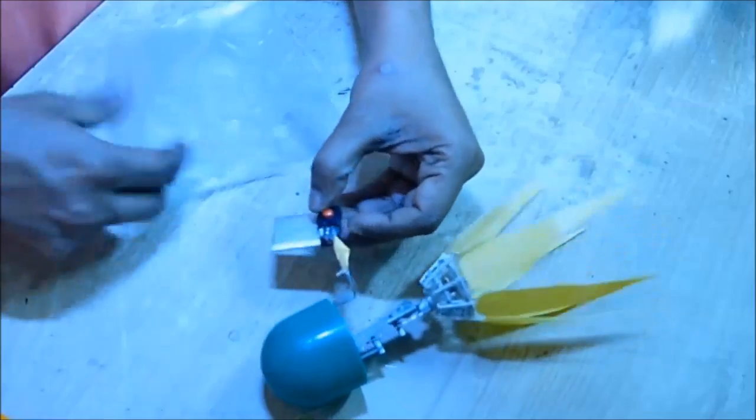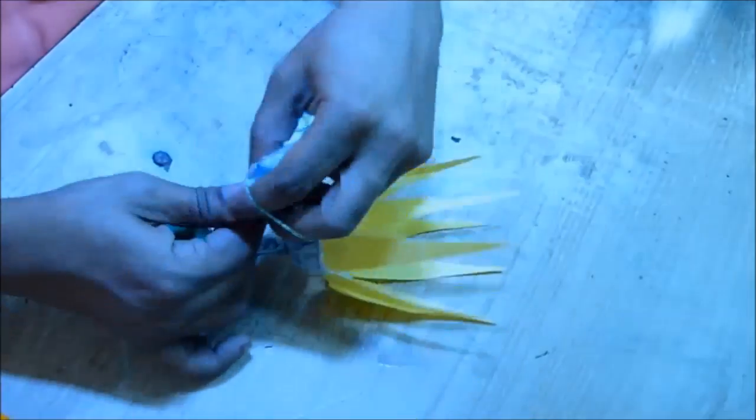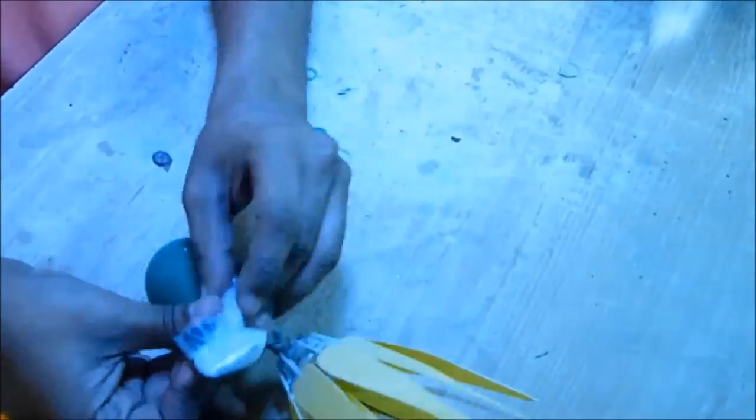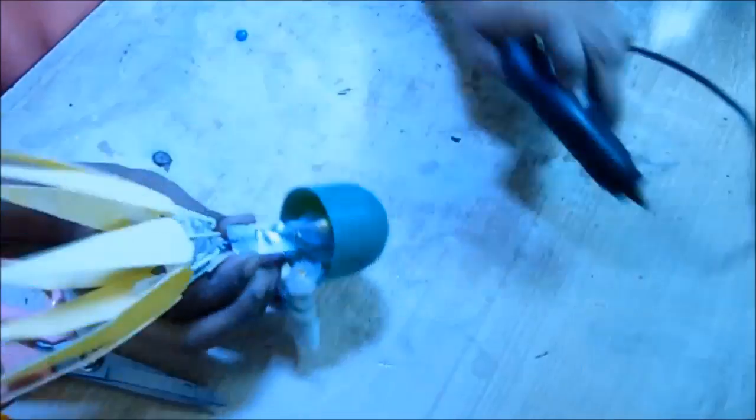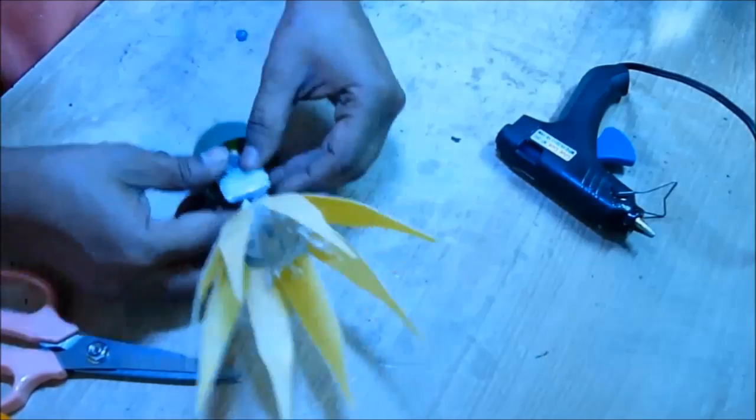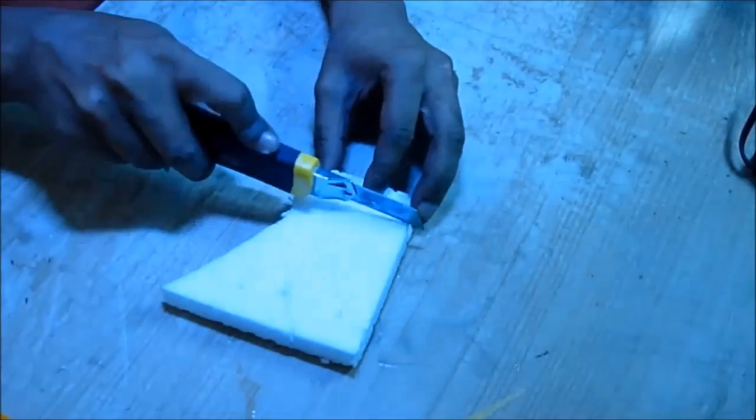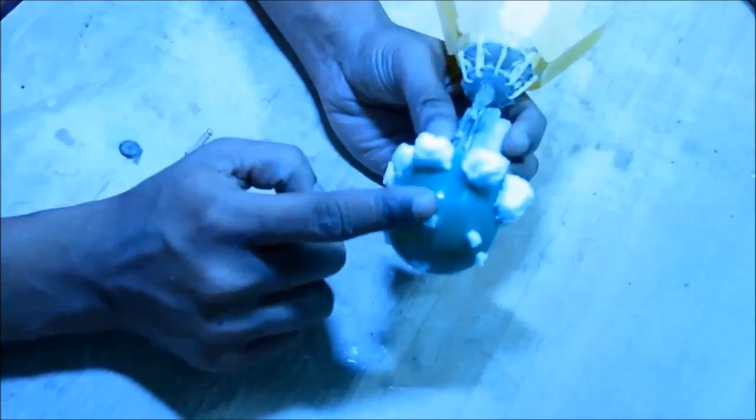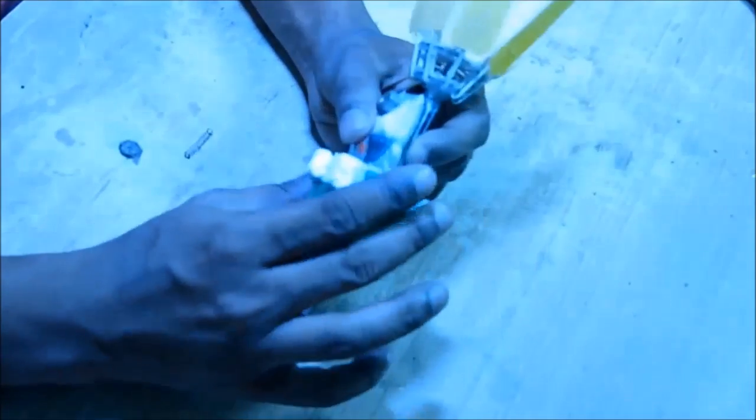Now to make it waterproof, pack it inside a plastic packet and tie it with rubber bands. Now glue it at the center. Once done, you can now add some thermocol pieces all around like this to increase the buoyancy so that it can float inside the water.